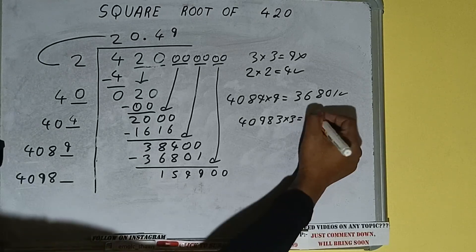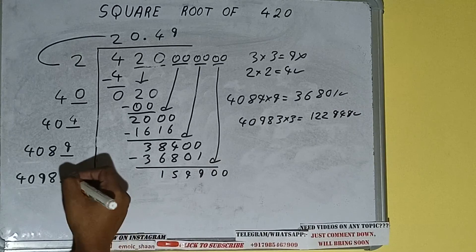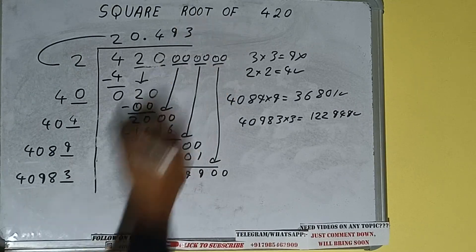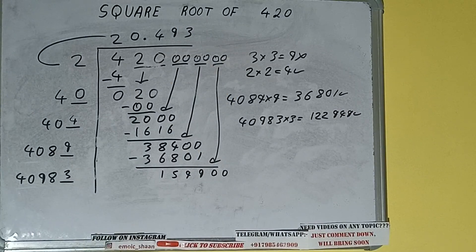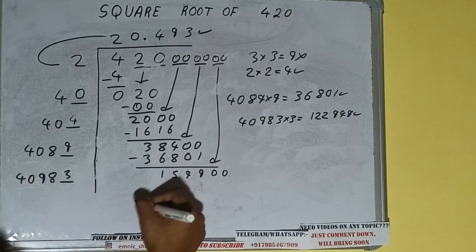And we'll be having 122,949, which is good to take. So 3 here and 3 here. But we don't need to calculate because we got the answer correct up to three decimal places. So the square root of 420 will be 20.493.